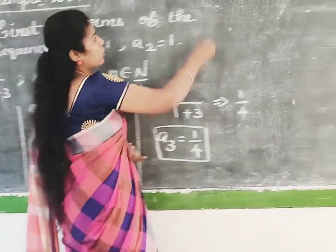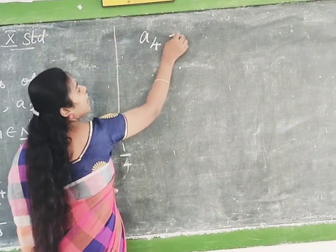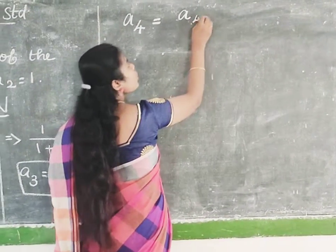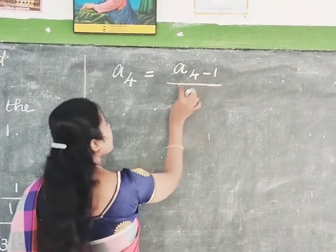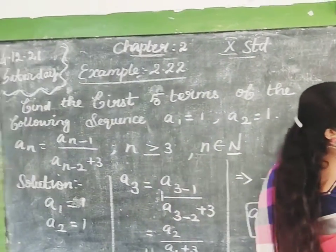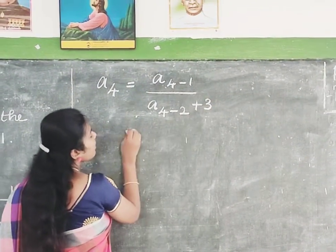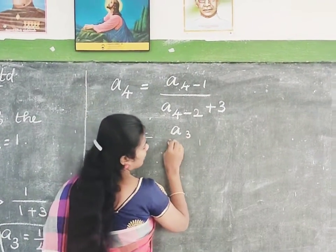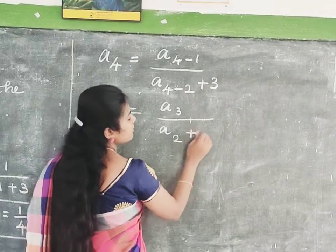Now we can calculate A4. Using the common formula with N equal to 4: A4 equals A(4-1) divided by A(4-2) plus 3. That is A3 divided by A2 plus 3. So 4 minus 1 answer is 3, and 4 minus 2 is 2 plus 3. A3 answer is 1 by 4.